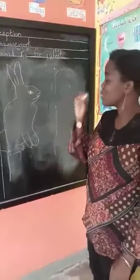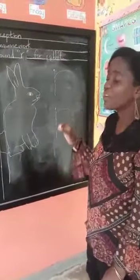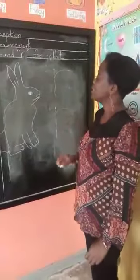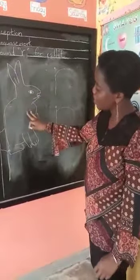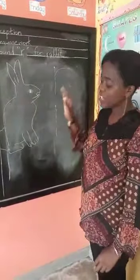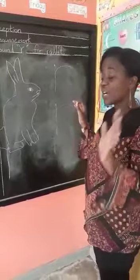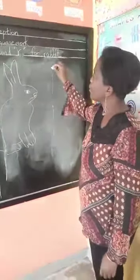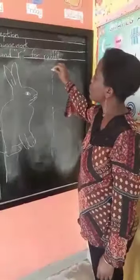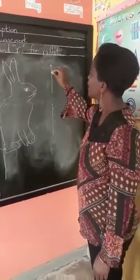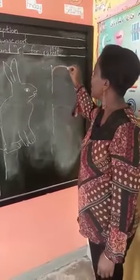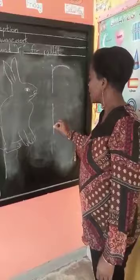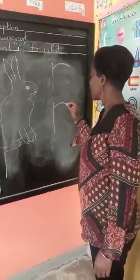So let us look at the blackboard and see how we write sound R. I still have a picture of a rabbit. Make sure when I give you the work, you color the rabbit. So as usual, we always start at the big dot. We go down and then across like that. Down, come up, across.